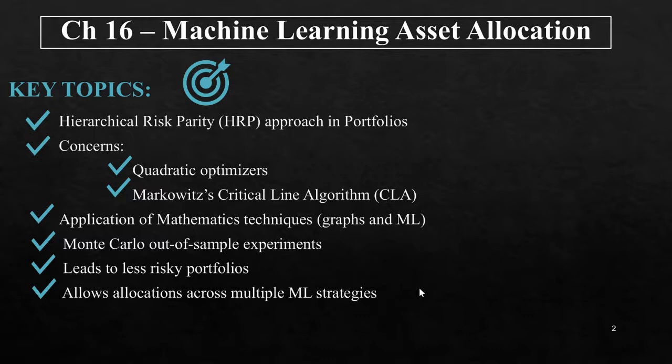In fact, HRP can compute a portfolio on an ill-degenerated or even a singular covariance matrix, an impossible fit for quadratic optimizers. Monte Carlo experiments show that HRP delivers lower out-of-sample variance than CLA, even though minimum variance is CLA's optimization objective. HRP produces less risky portfolios out-of-sample compared to traditional risk parity methods, and historical analyses have also shown that HRP would have performed better than standard approaches. A practical application of HRP is to determine allocations across multiple machine learning strategies.